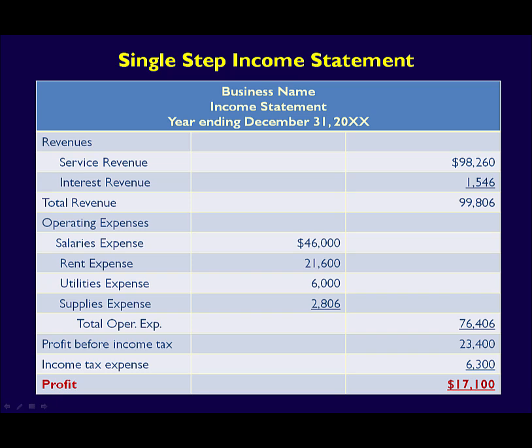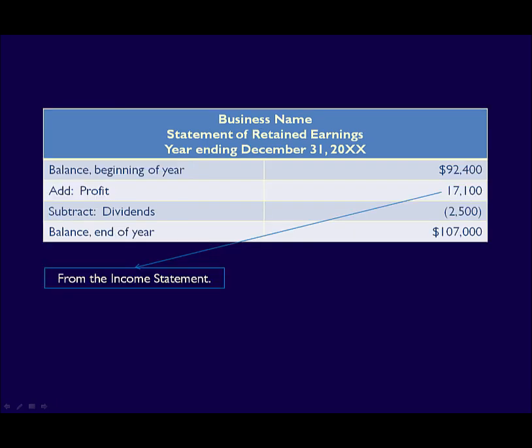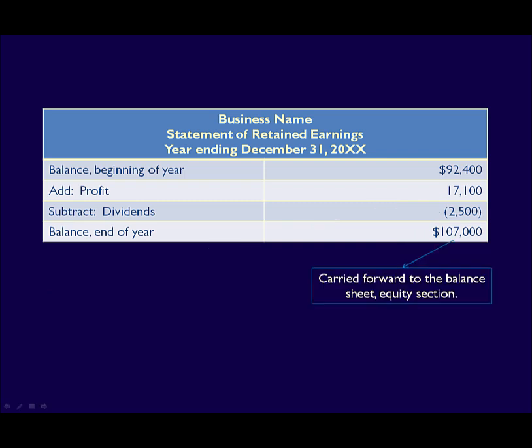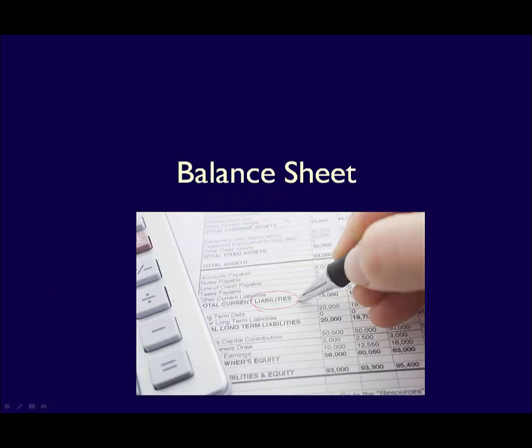The profit at the bottom of the income statement is then used in the statement of retained earnings. This statement shows how much of the profit has been retained or kept by the business for future growth and expansion, and how much has been paid out in dividends to the owners.